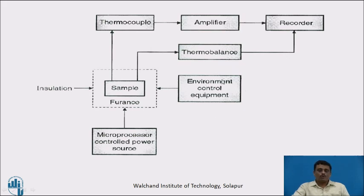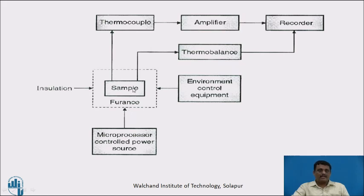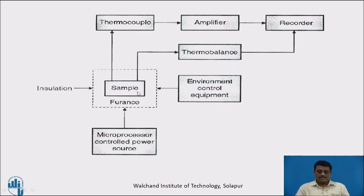There is also environment control equipment. Its role is to maintain an inert atmosphere around the sample while it is being heated, because there is a possibility of the sample reacting with atmospheric impurities and being converted to unwanted by-products. To avoid this chemical reactivity, the environment control equipment provides a flow of inert gases across the sample.